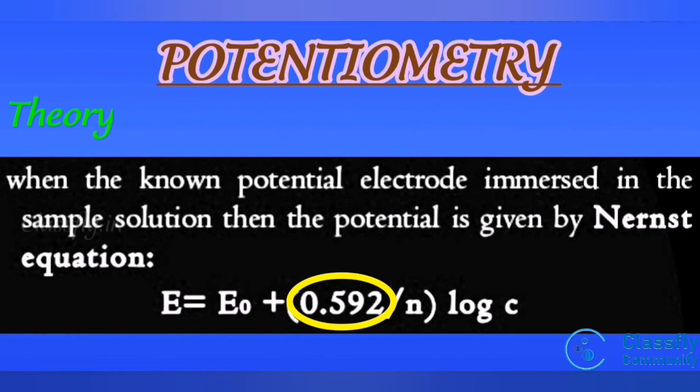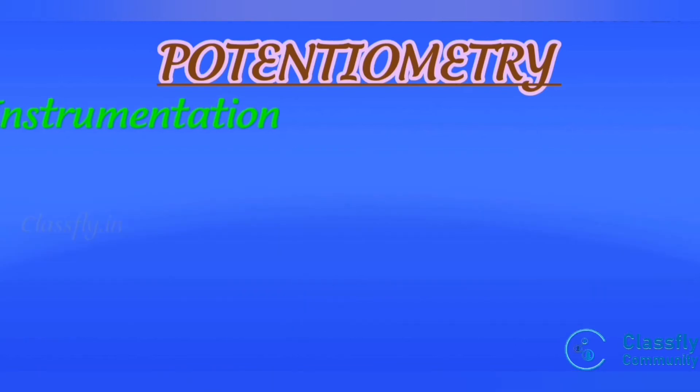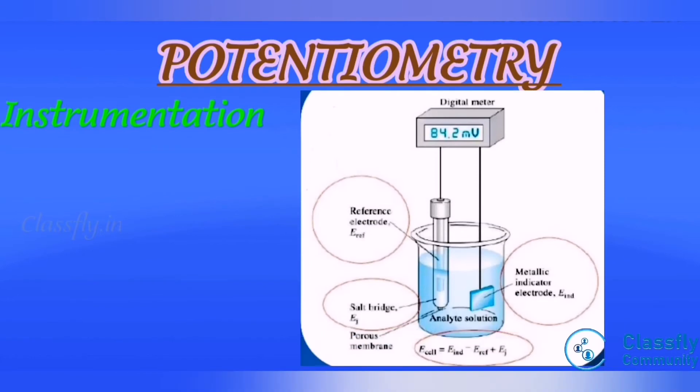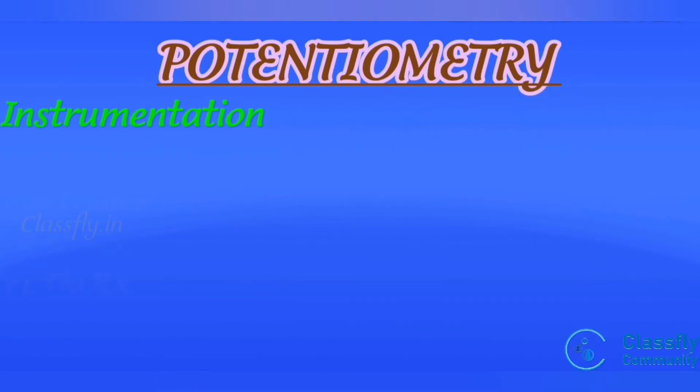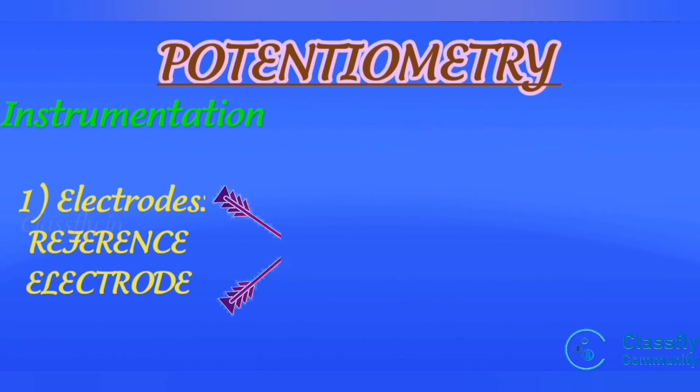Instrumentation: The instrumentation used to perform potentiometry is straightforward. It consists of: first one, electrode that is mainly included in reference electrode and indicator electrode; second one, salt bridge; and third one, analyte.